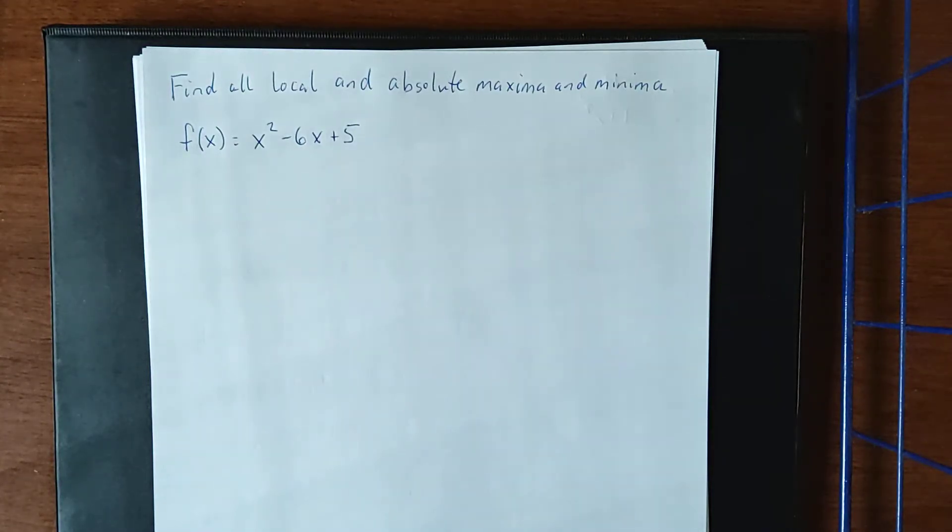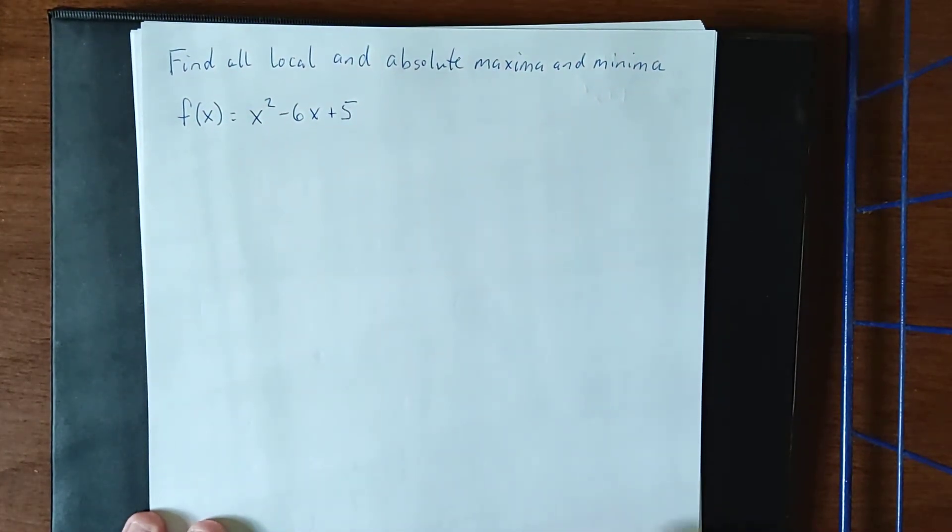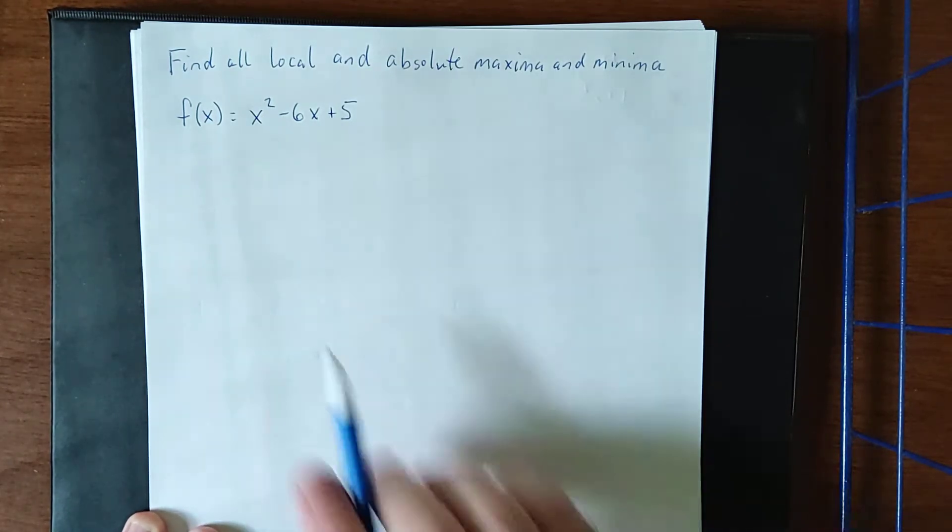Now that we've had the opportunity to introduce the concepts of local and absolute maxima and minima, we're going to use some algebraic techniques to figure out where those absolute maxima and minima occur.